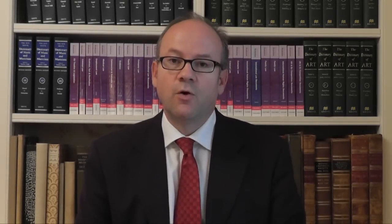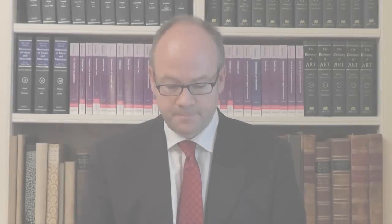The two key provisions in the Human Rights Act which modify the law are Section 3, which enacts a new rule of statutory interpretation — which we see here — and also Section 6, which enacts a new obligation on public authorities, and we see that here.